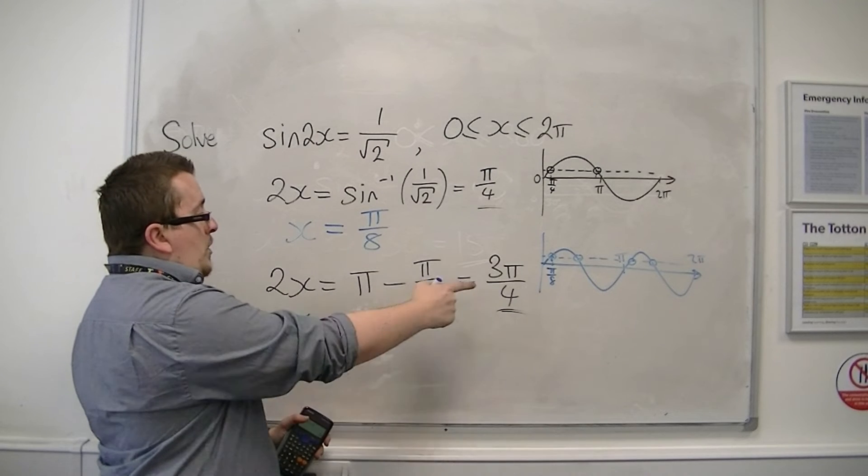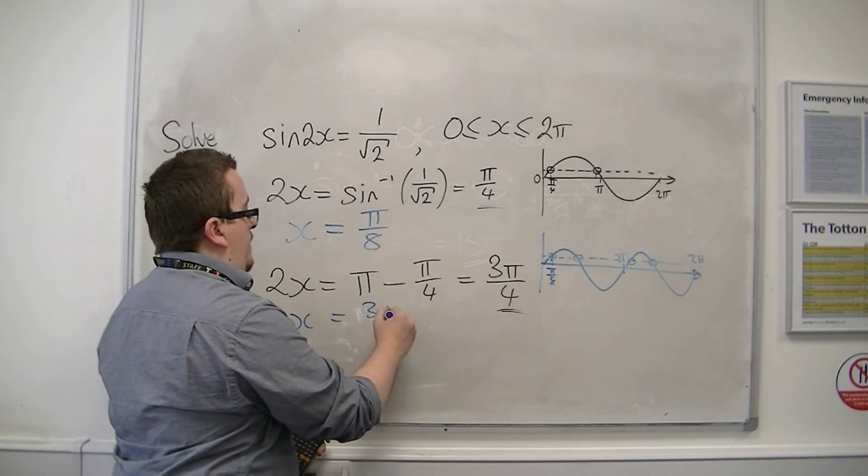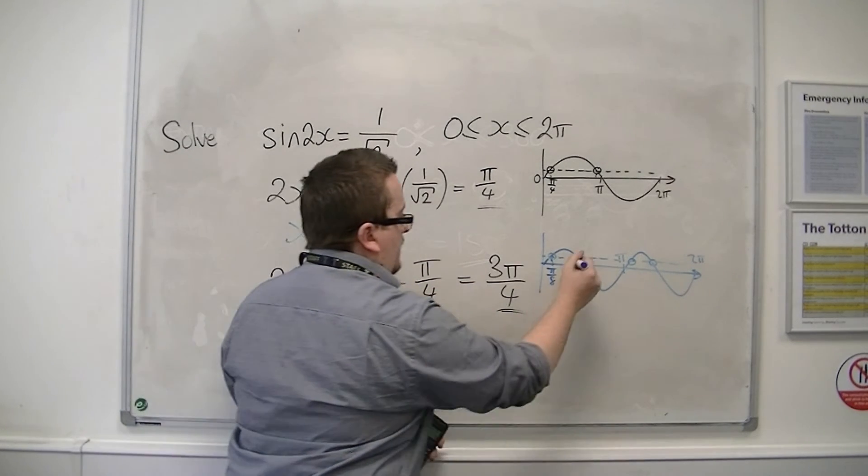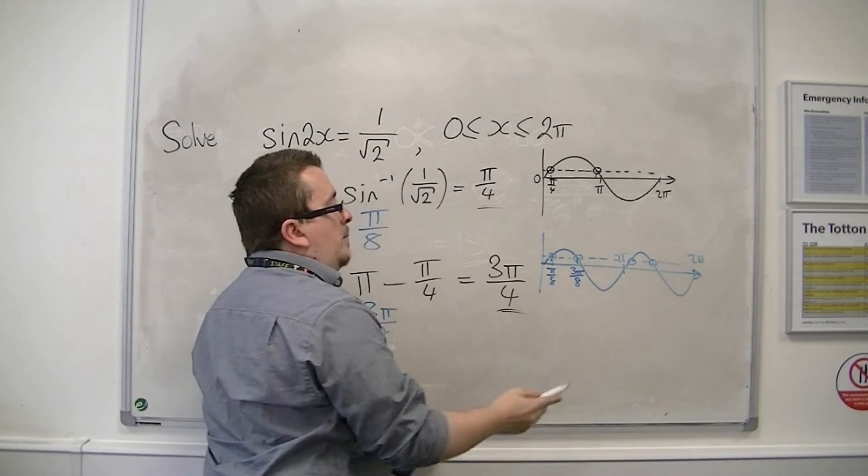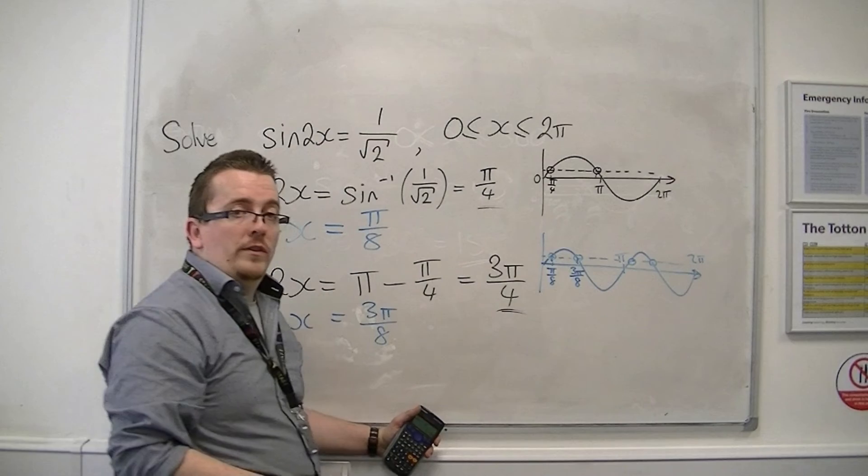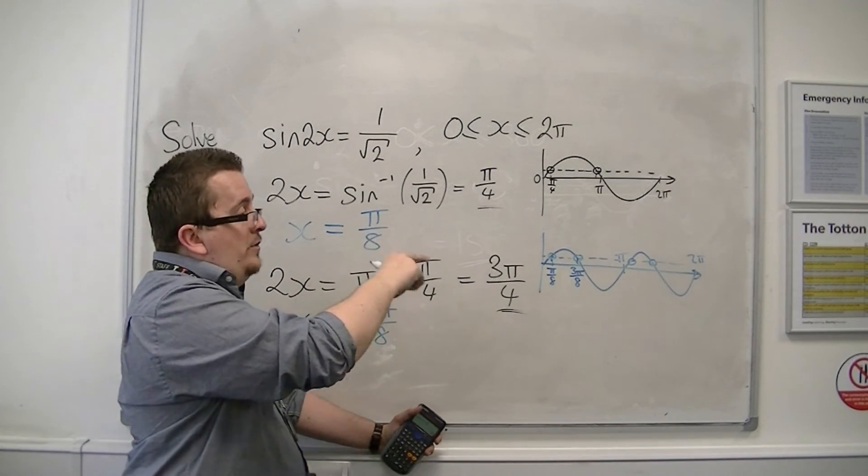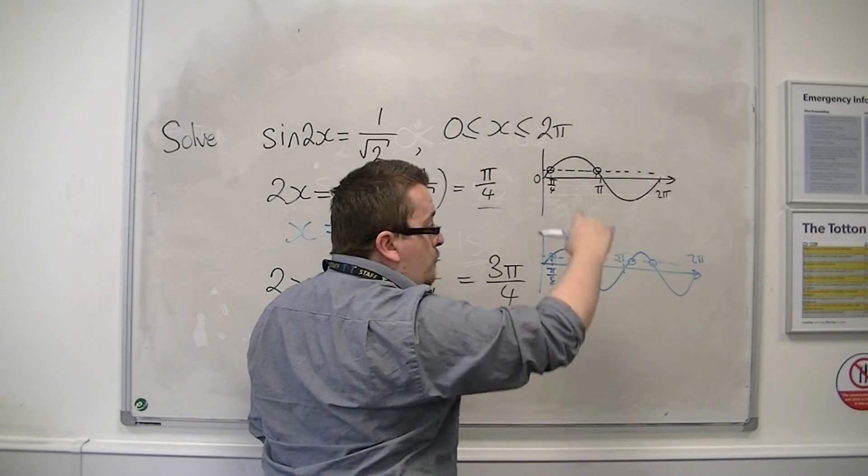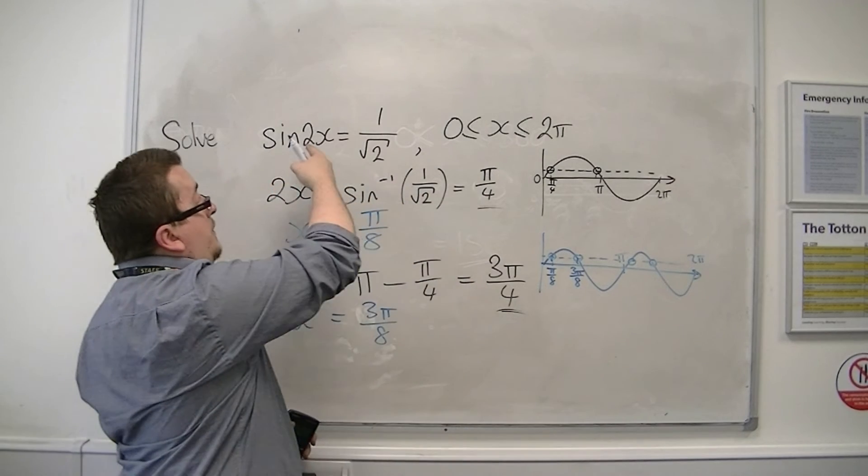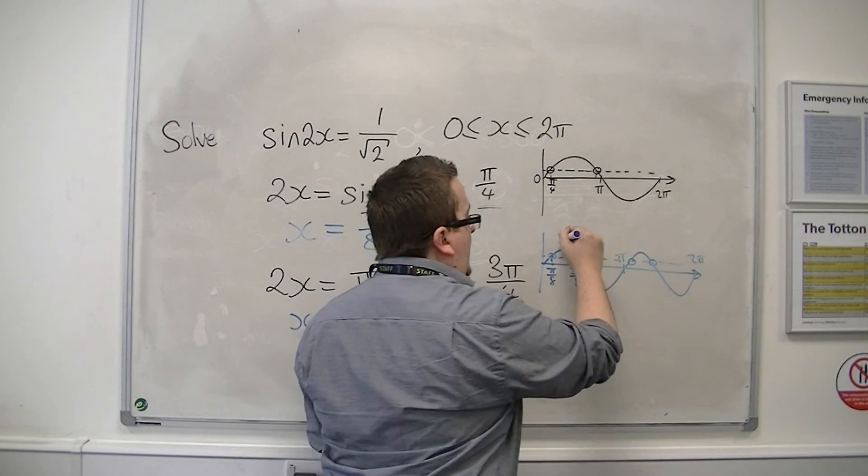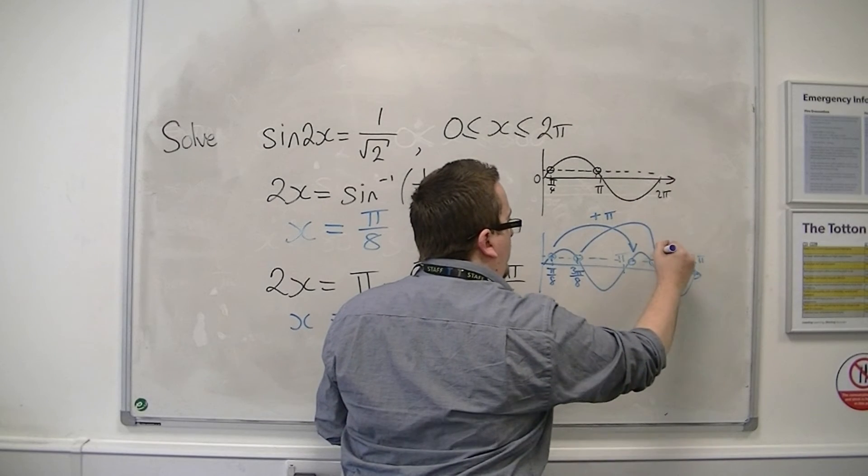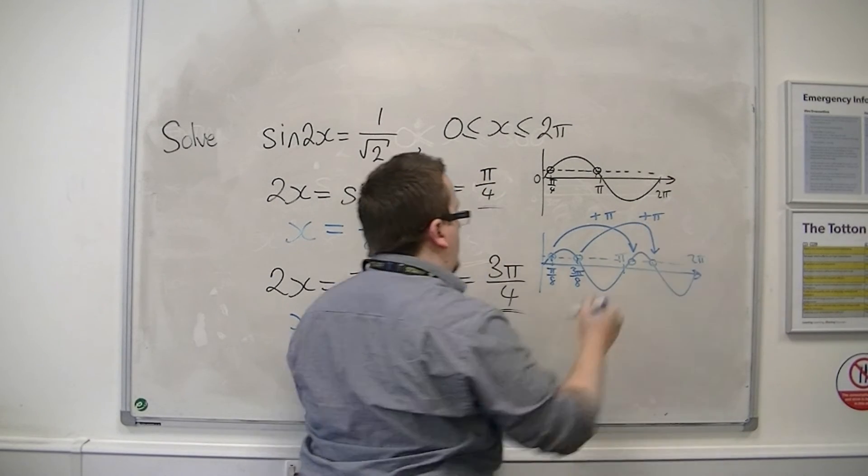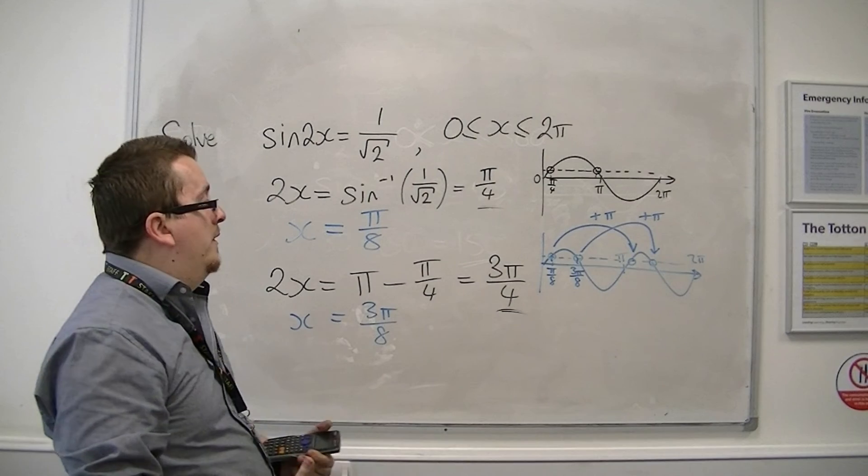If I divide both sides of this equation by 2, I get 3 pi over 8. That's my second solution. But as you can see, there are two more solutions. And because I now know that the sine curve will repeat every pi, because it's sine of 2x, I can add pi to both of my solutions to get the remaining two answers.